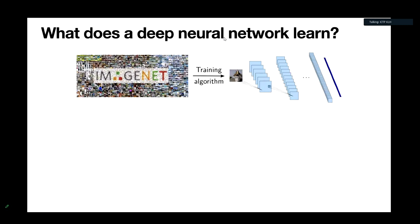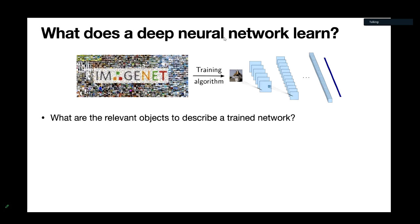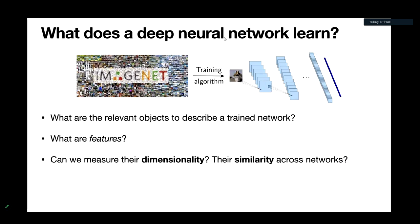I want to ask: what does a deep neural network learn? I take my favorite CNN architecture, train it on ImageNet, and have this black box that gives me good classification predictions. So what has been learned? What are the relevant objects to describe the trained network? Of course, if you give me all the parameters you have everything you need, but can we find a more compressed representation? Are all the parameters really important? We talk about feature learning all the time — but what really are the features? Things I'd like to do: measure the dimensionality, i.e., the number of effective parameters, and compute the similarity between networks.